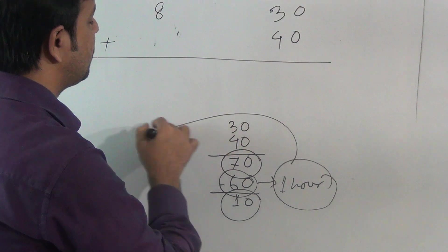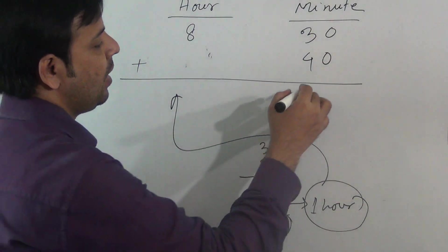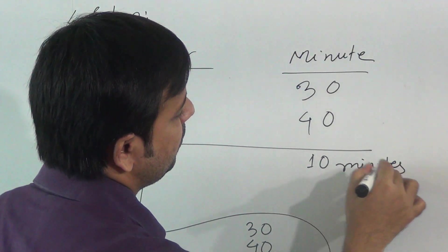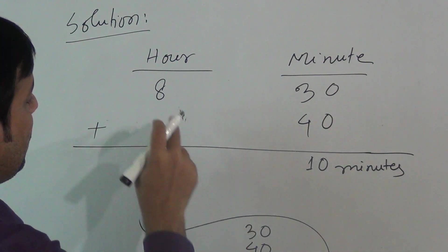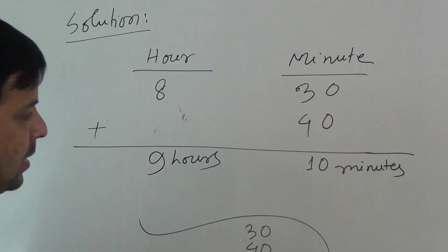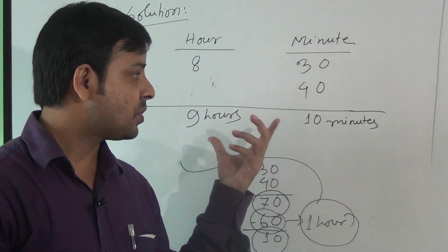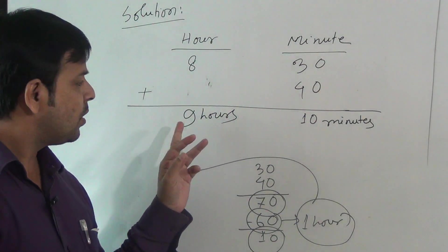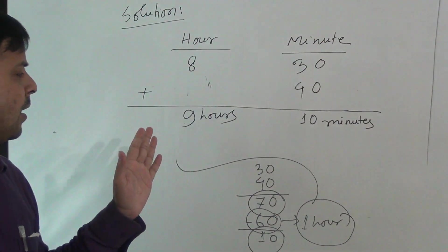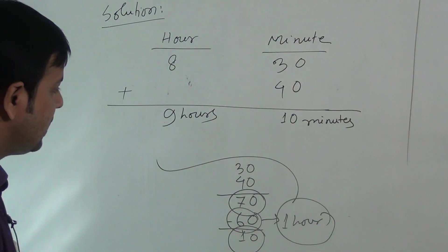This 1 hour we have to add with the hour column, and this 10 minutes we write in the minute column. So the minute is 10, and adding the 1 hour carry gives us 9 hours. So we have 9 hours 10 minutes. Written as a time, this is 9:10. So we can say the mathematics class breaks at 9:10.